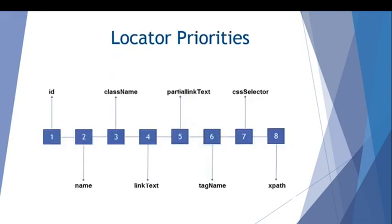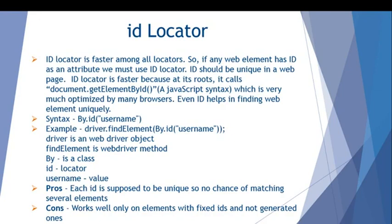The priority order of locators: ID comes first because ID is unique and is the fastest locator. Second is name, third is class name, fourth is link text (useful for hyperlinks). If the link text is very lengthy, use partial link text — that's fifth. Sixth is tag name, seventh is CSS selector, and the last is XPath.